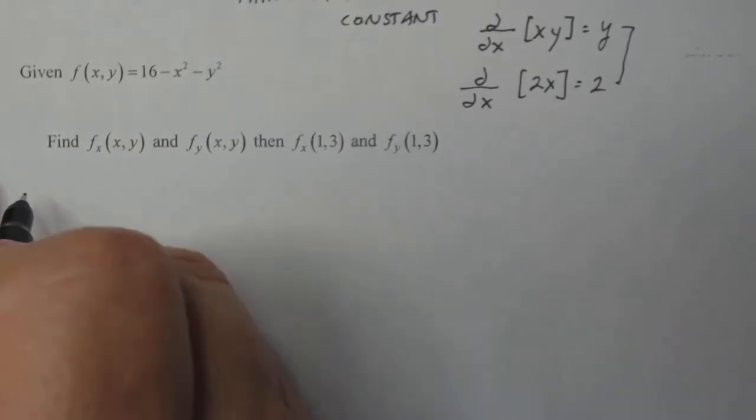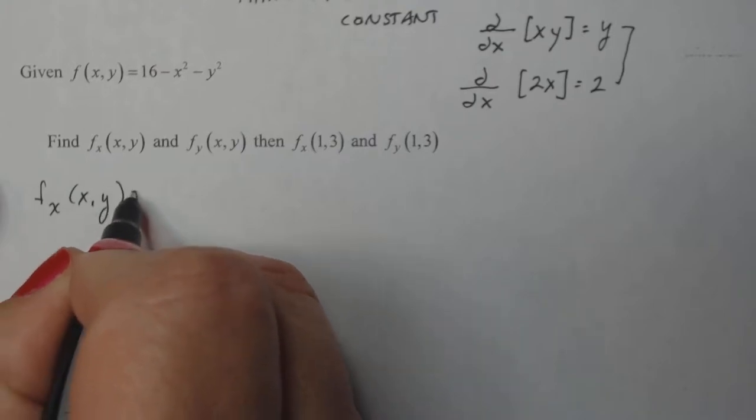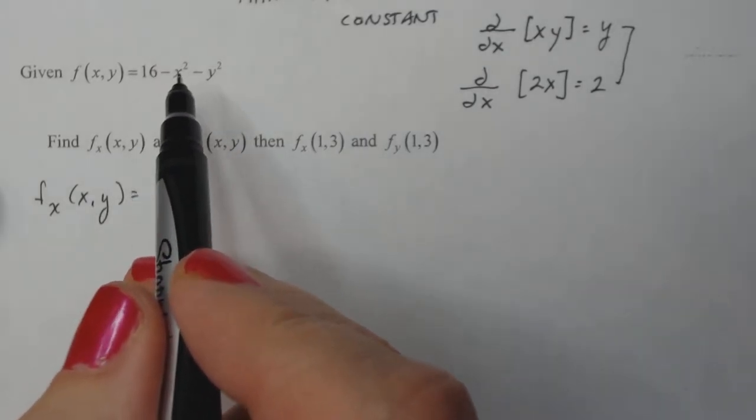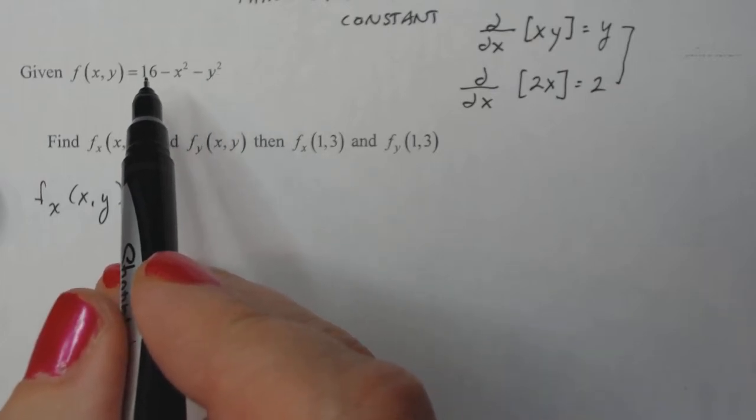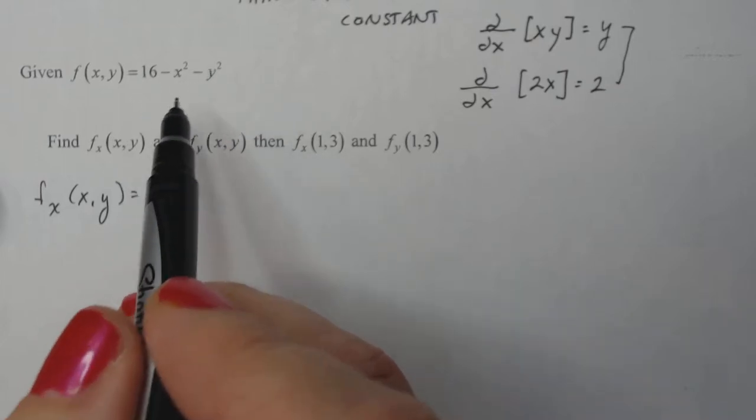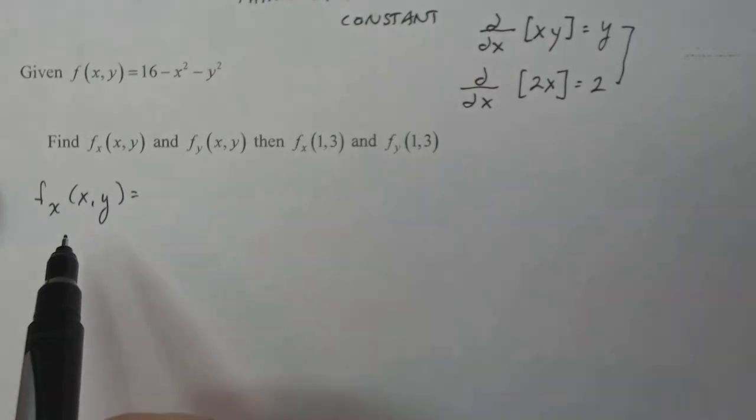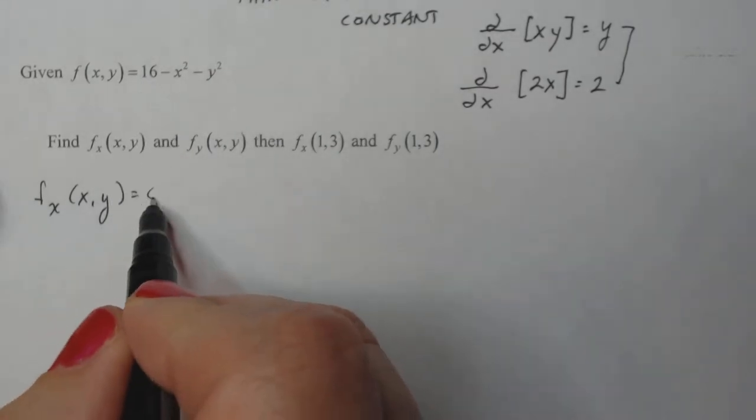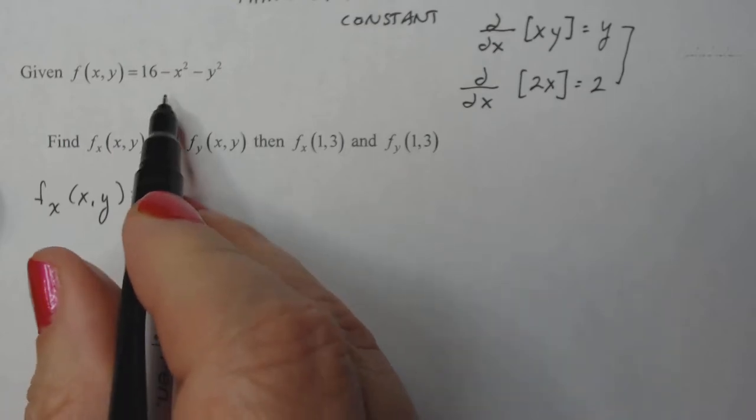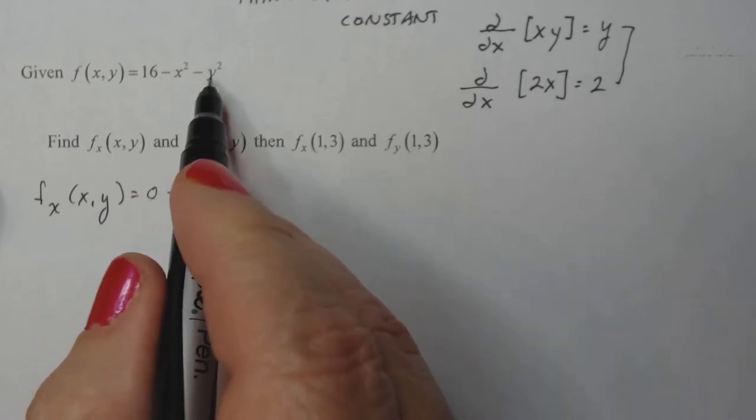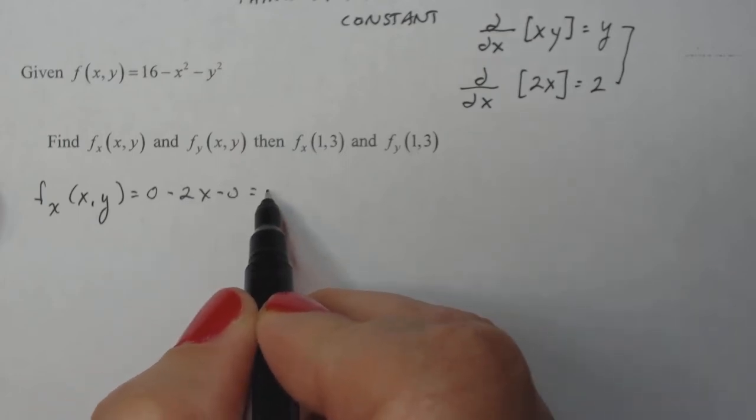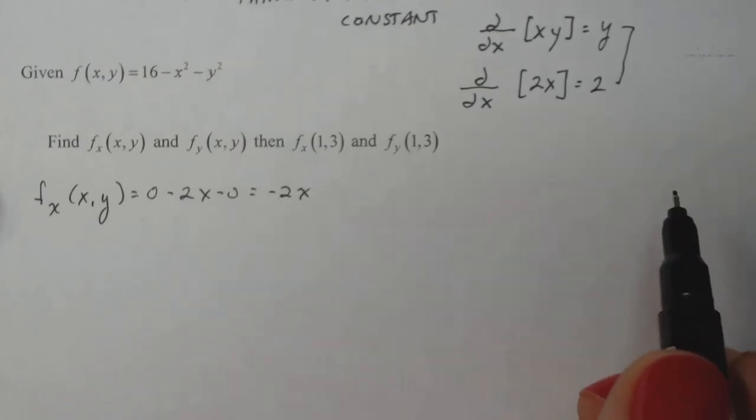All right, so if I want to do f sub x of xy, so this is f of x here. I have to take, since there are sums and differences of all these terms, I just take the derivative of each term with respect to x, treating y as a constant. So the derivative of a constant is zero. The derivative of minus x squared is minus 2x, and the derivative of a constant is also zero, so then that derivative turns out to be minus 2x.